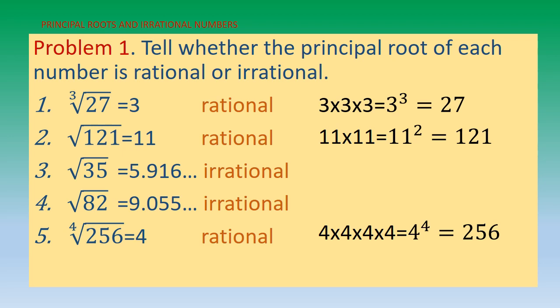To get the value of these radicals, we go back to multiplication with the same factors. This is how to tell whether the principal root of a number is rational or irrational.